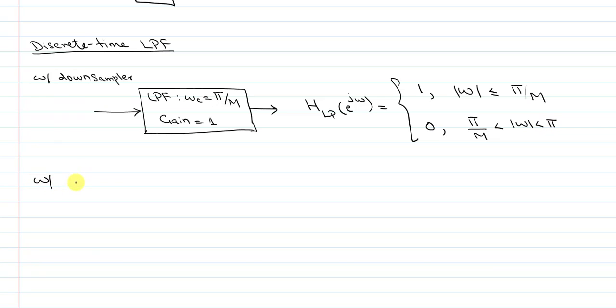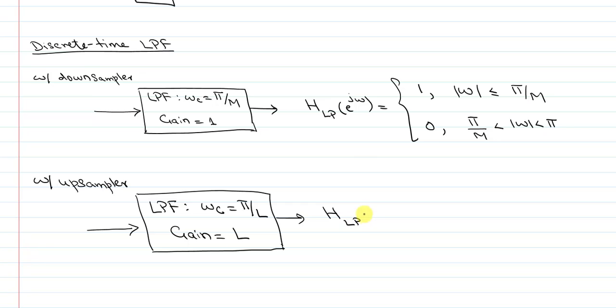We also will be using a low pass filter with up sampler. Again, why we need that? That will be discussed later. So when we use it with up sampler, the cutoff frequency is again in terms of the integer factor. But the difference from the down sampler will be that the gain will be in this case equal to L, which means that if I write down the fourier transform, that will be equal to L up to the cutoff frequency of pi over L and 0 for frequencies other than this range. So just remember these three main building blocks. We will be returning to them when we discuss explicit effects of down sampling, up sampling and interpolation in terms of the frequency domain.